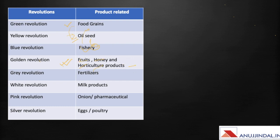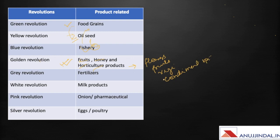Horticulture products would include flowers, fruits, vegetables, spice condiments and spices, and all post-harvest materials.